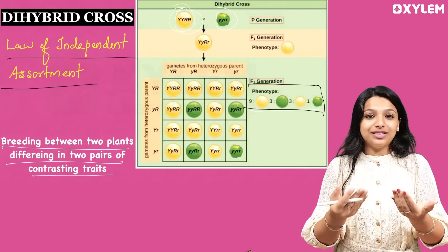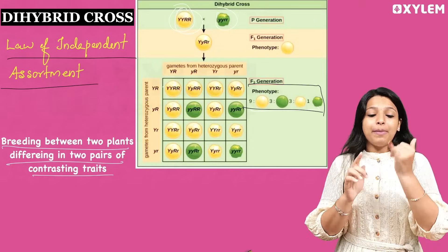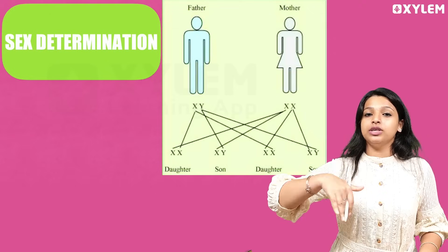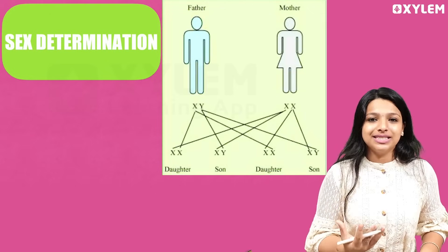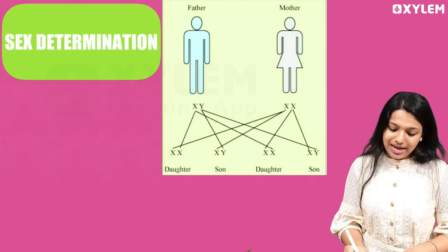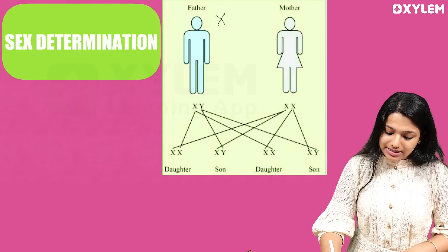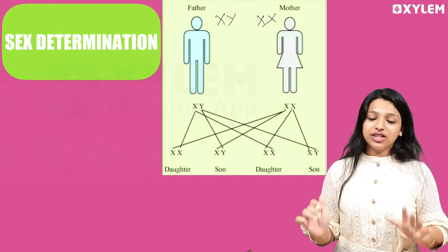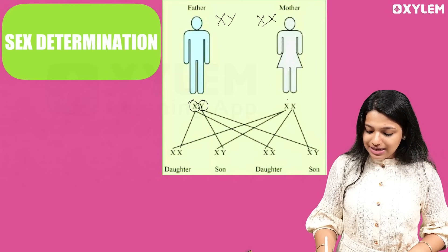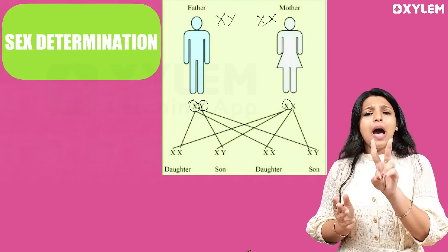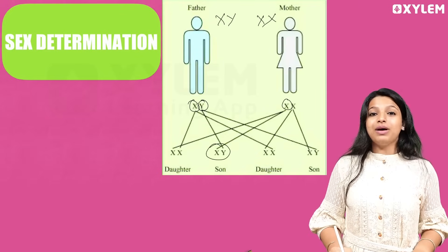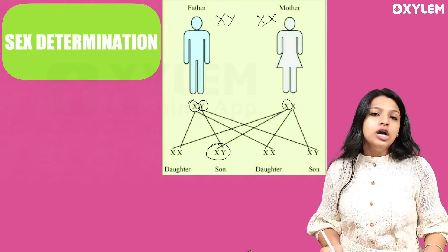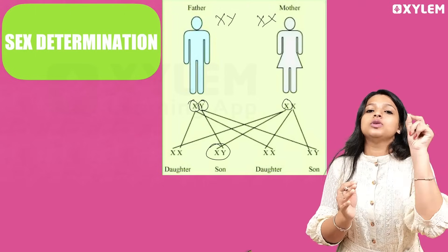We also study sex determination. Human beings are male and female. The father has XY chromosomes and the mother has XX chromosomes. These are sex chromosomes. The male contributes either X or Y, while the female contributes X. So the sex of the child is determined only by the chromosome contributed by the father.